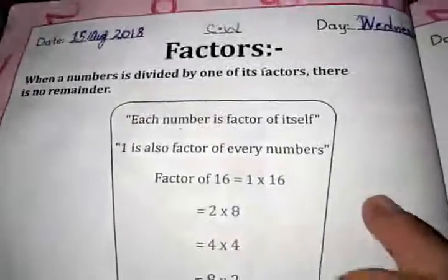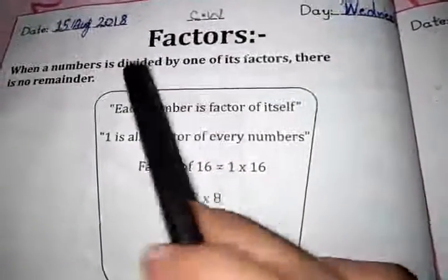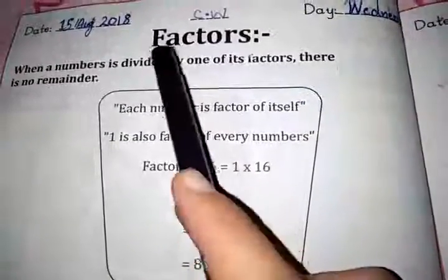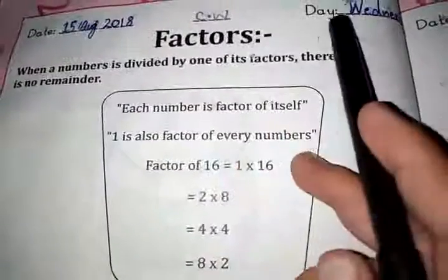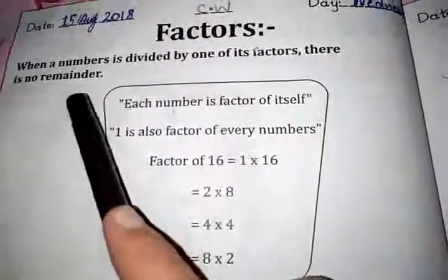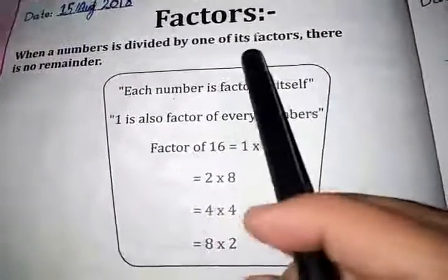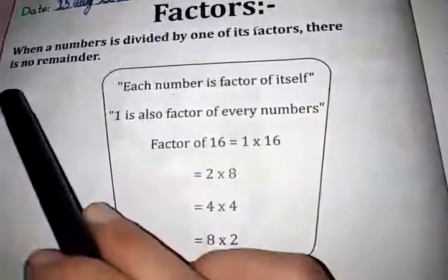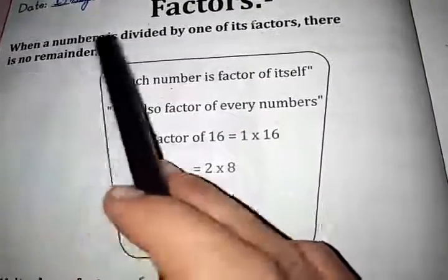Today we are going to start page number 20, Factors. Students, first of all, we have to mention the date. When a number is divided by one of its factors, there is no remainder.